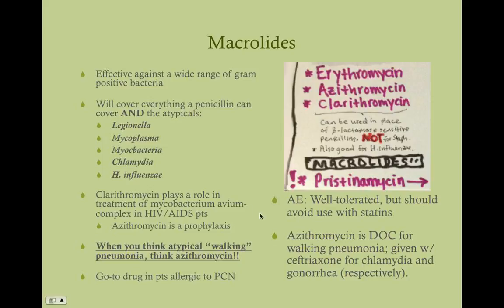Azithromycin is the drug of choice for walking pneumonia. It's also given with ceftriaxone if the patient is diagnosed with either chlamydia or gonorrhea. If you diagnose a patient with either, you give azithromycin PO and ceftriaxone intramuscular injection. The azithromycin is effective against chlamydia, and ceftriaxone is effective against gonorrhea. However, because many patients carry the other asymptomatically or there was a misdiagnosis, we prefer to treat for both regardless of which one was diagnosed.